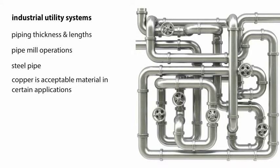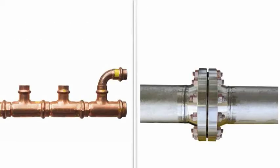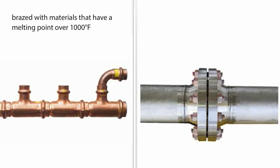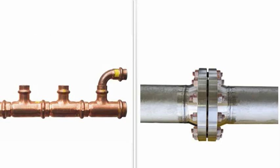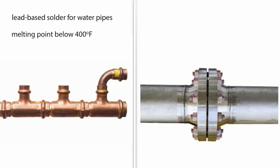If copper is used, the joints must be brazed with materials that have a melting point of over 1,000 degrees Fahrenheit. Most commonly used brazes, but not solders, meet this requirement. This is different from the typical lead-based solder used for water pipes, which has a melting point below 400 degrees Fahrenheit.